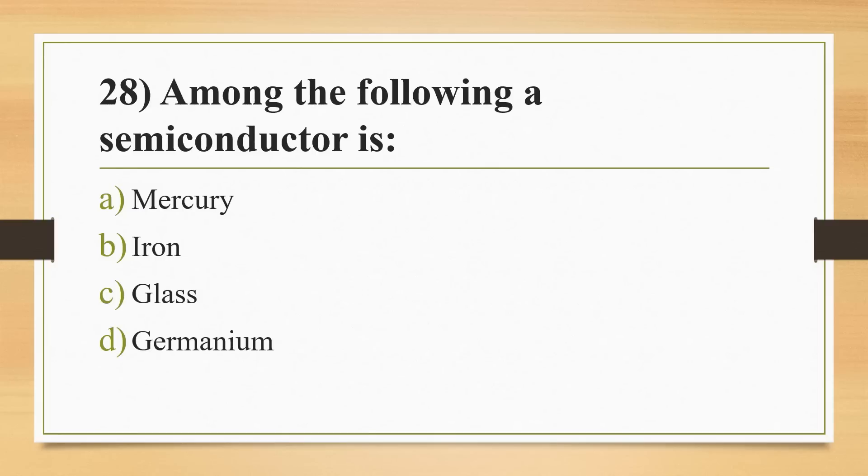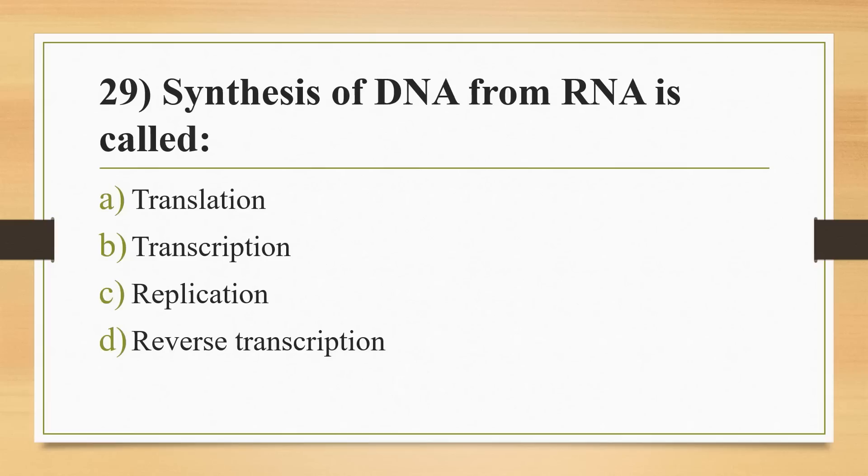Twenty-eighth question: among the following, a semiconductor is? Options: mercury, iron, glass, or germanium. Answer is Option D, germanium. Twenty-ninth question: synthesis of DNA from RNA is called? Options: translation, transcription, replication, or reverse transcription. Answer is Option D, reverse transcription.